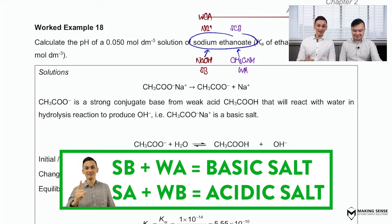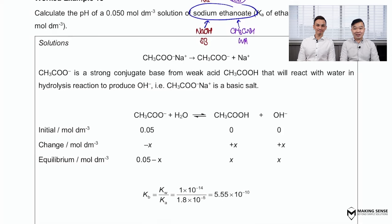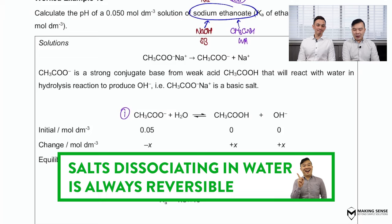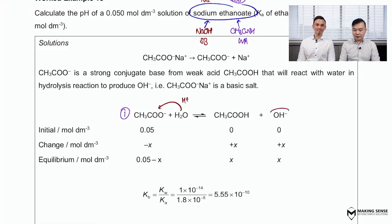Always focus on the strong one — that's the acetate ion. The reason is that the acetate ion will undergo a hydrolysis reaction where it reacts with water in a reversible reaction. That is the first step: write down the reversible equation. A base is always going to grab a proton — this time from water — and as a result you form OH⁻, which is exactly why we say that the salt is a basic salt.